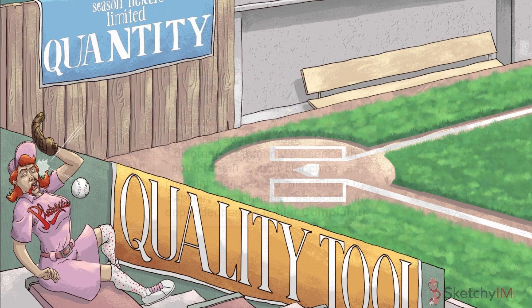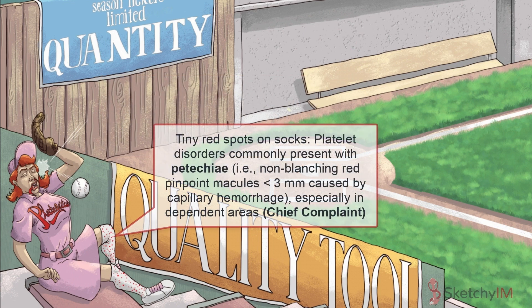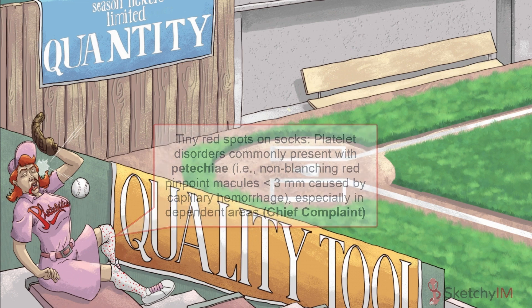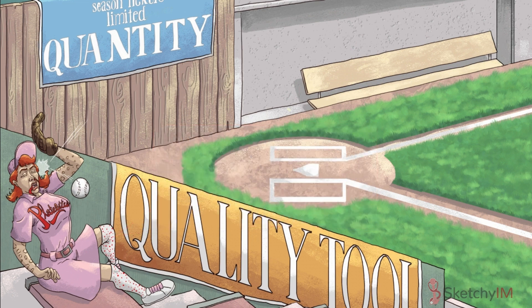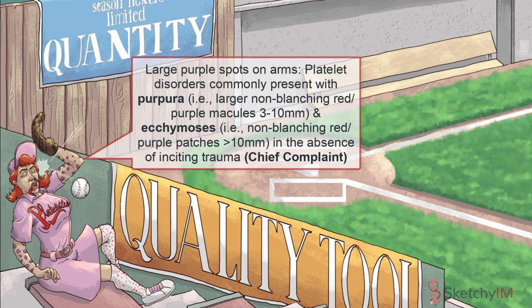Patients with platelet disorders may also present with tiny red dots over their feet and ankles. These are called petechiae — pinpoint capillary hemorrhages that form in independent areas of the body. The one place you won't see petechiae is the soles of the feet. Patients may also complain of larger skin manifestations, including purpura, which are larger macules formed by confluences of petechiae. Beyond that, patients may also have even larger lesions called ecchymoses, aka bruises, that are larger than 1 cm in diameter.